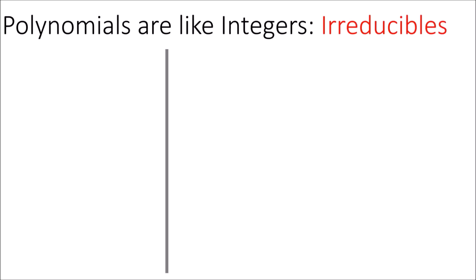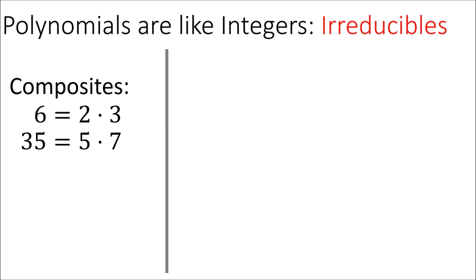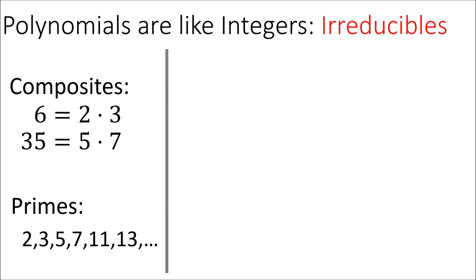Finally, I'll talk about irreducibles, which are the equivalent of prime numbers for polynomials. With the integers, some integers are called composites, which means they can be factored — for example, 6 can be broken up into 2 times 3, and 35 into 5 times 7. Prime numbers are the integers which can't be factored, and these include 2, 3, 5, 7, 11, 13, and so on. Any integer can be written as a product of 1 and itself, but we don't really count that as real factoring — a prime number can't be broken up into any multiplication of factors other than that trivial case.